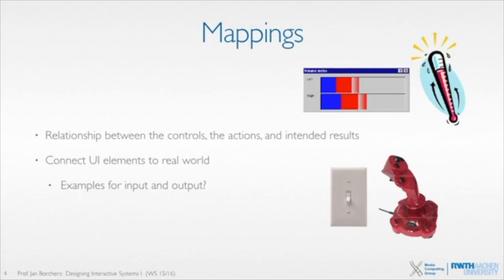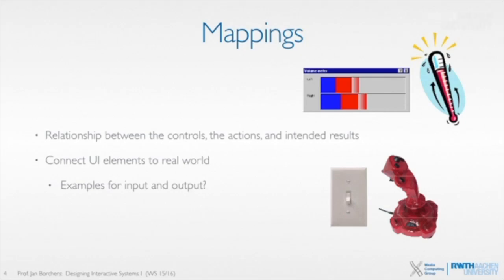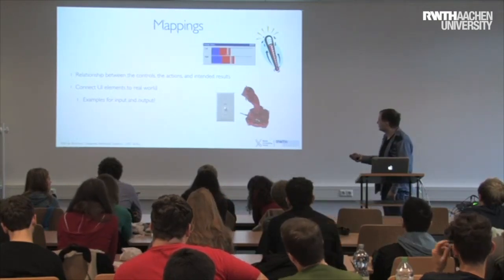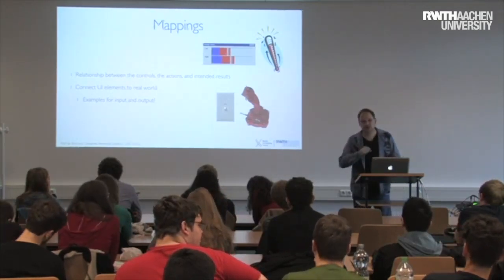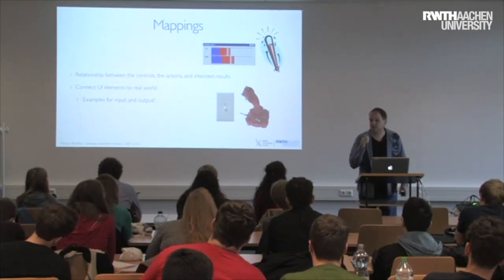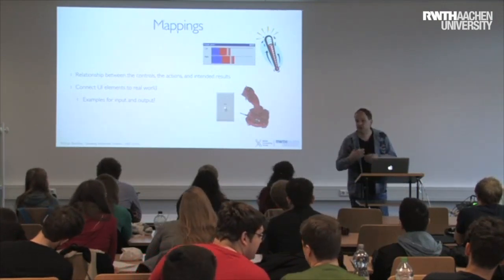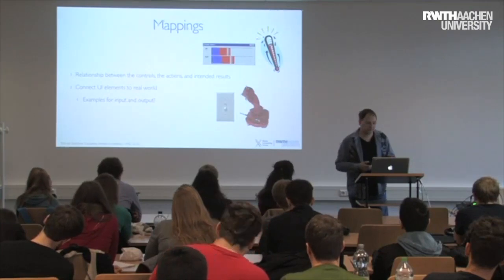Here are some examples. This light switch takes an input — it's either in the bottom or top position, flick down or up — and that maps to whether a light is on or off. A joystick is a bit more complicated: it has all kinds of physical directions you can move it and buttons you can press, and that leads to effects in the application or game you're playing.